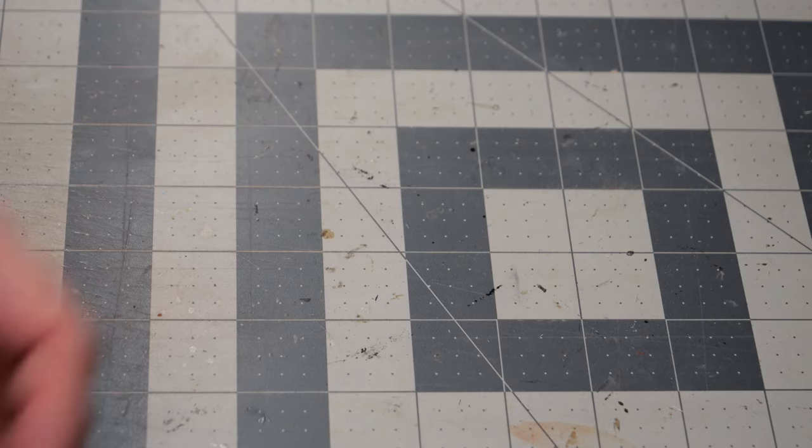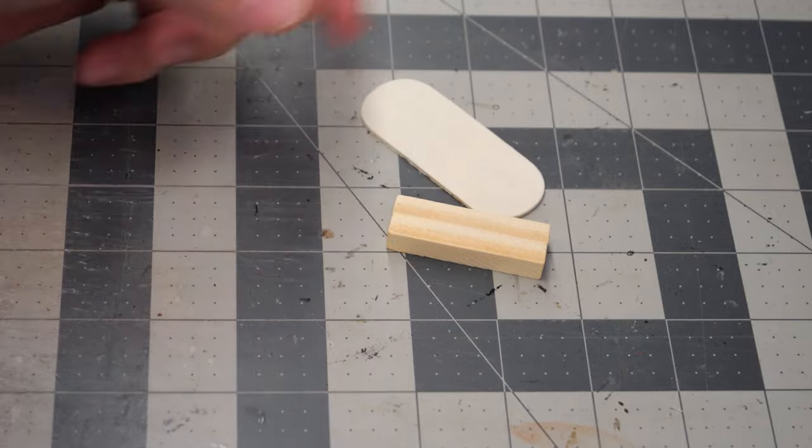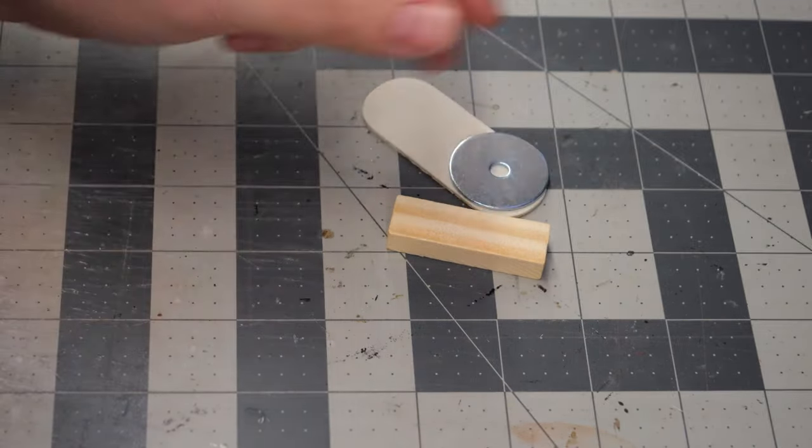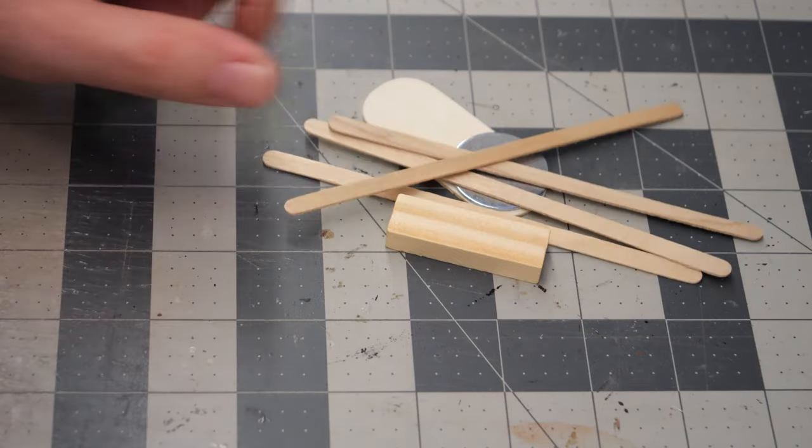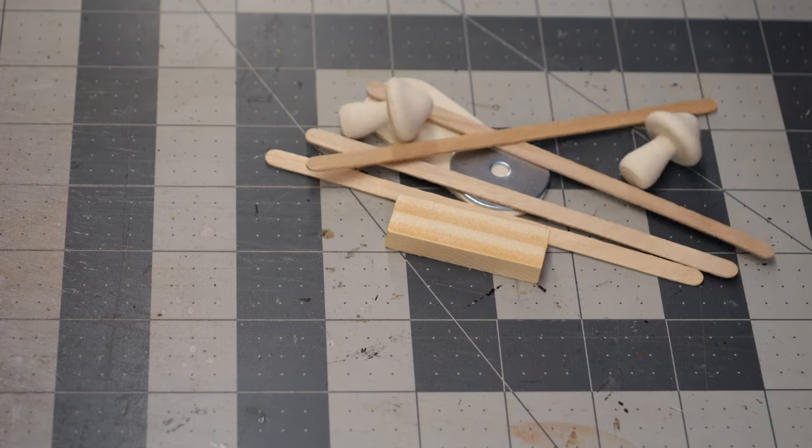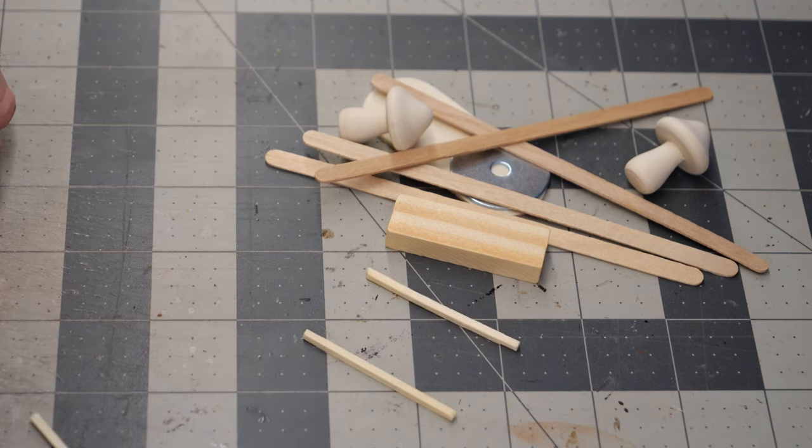Today we're going to be crafting up some tables, and to do that we're going to use a Jenga block, a couple of these very large wooden tiles, some washers, these are an inch and a half, some coffee sticks, and then I found these little mushroom wood blocks at the Dollar Tree, so we're going to use a couple of them as well, and finally some matchsticks.